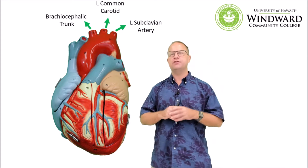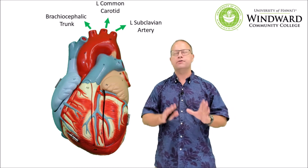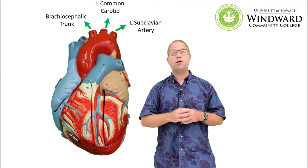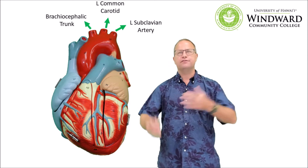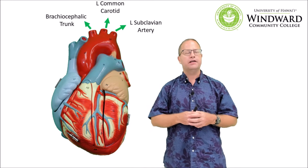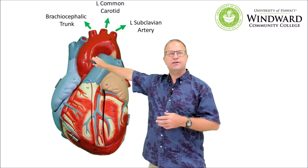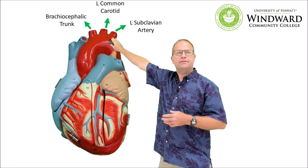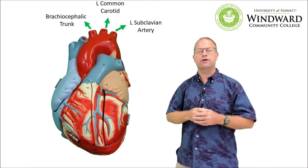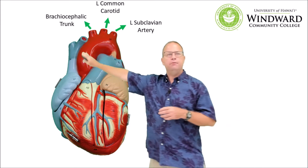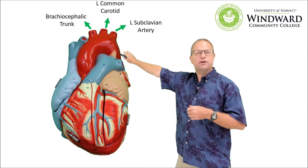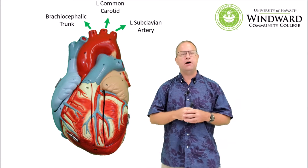Now let's take a look at the three branches of the aorta. Arteries carry blood away from the heart, so this artery is carrying blood into three different places. On the right hand side we have the brachiocephalic trunk — brachio means arm, cephalic means head — which gives rise to the subclavian artery and the right carotid artery. On the left we have a left common carotid artery and a left subclavian artery branching separately. So the arteries here are not bilaterally symmetrical.